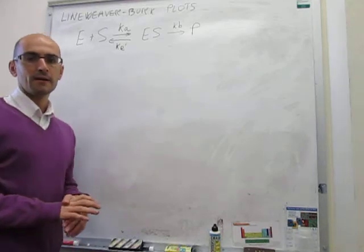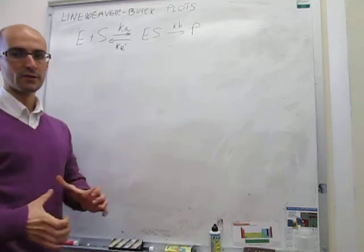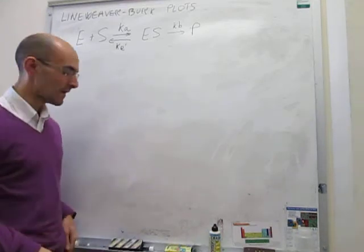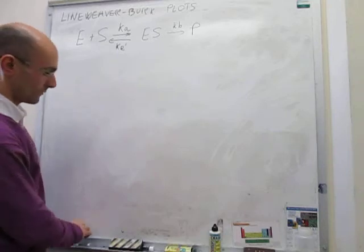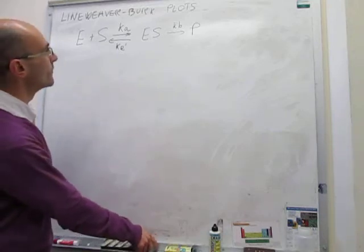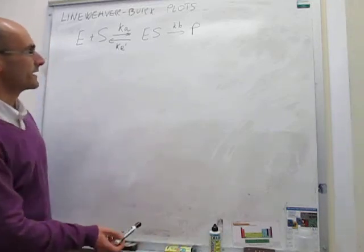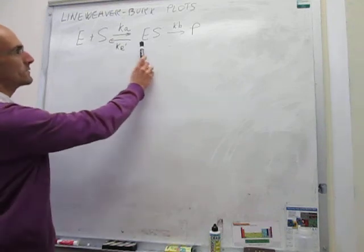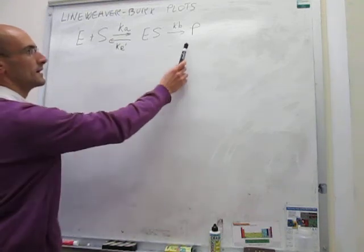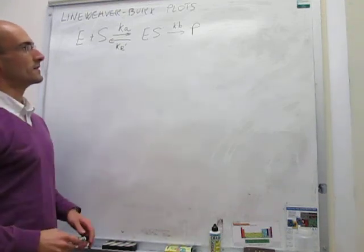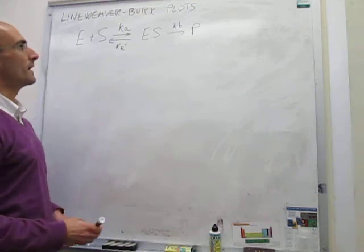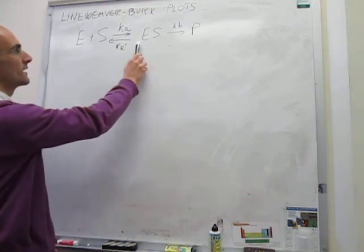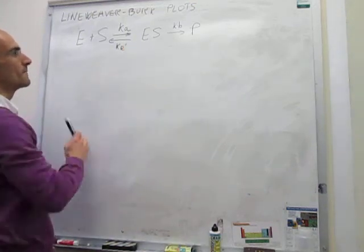Good morning everybody. Today I'm going to continue with the enzyme-substrate kinetics discussion. The other day we actually looked at the general mechanism for enzyme kinetics, which is this: the enzyme binds with the substrate, forms an enzyme-substrate complex, and that yields products P. The rate constants are K sub P, K sub A, and K sub A' in this case.